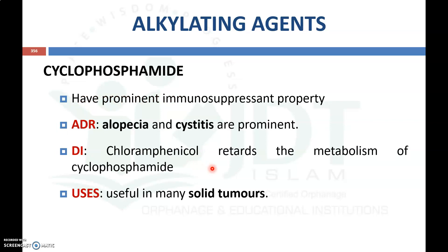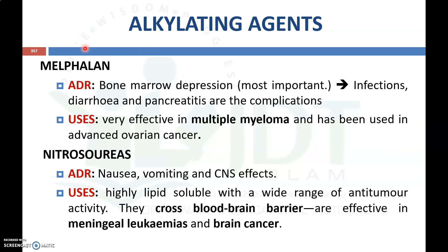The next important alkylating agent is cyclophosphamide. It is a cytotoxic drug with prominent immunosuppressant properties. Important adverse drug reactions include alopecia and cystitis. An important drug interaction is that chloramphenicol retards the metabolism of cyclophosphamide via enzyme inhibition, thereby increasing cyclophosphamide blood levels and potentially causing toxicity. It is mainly used for treating solid tumors.